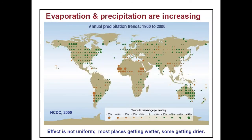We also see changes in evaporation and precipitation. As air temperatures are warmer, we see more water evaporating into the air — that's just what happens when air is warmer. That changes precipitation patterns, and the effect is not uniform. Most places are getting wetter, but some places are getting drier.